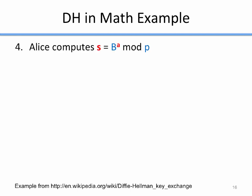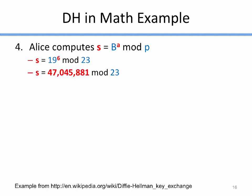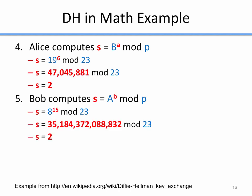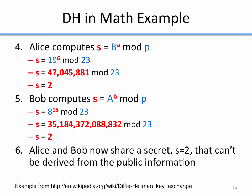Alice is going to compute the final secret shared number, which is capital B — the shared item she got from Bob — to the power of lowercase a modulo p. The shared number she got from Bob was 19, her secret number was 6, so she does 19 to the 6 mod 23 and gets 2. Bob does the same computation with his numbers: capital A to the power of lowercase b modulo p, so 8 to the 15 mod 23, which gives the same secret number, 2. So Alice and Bob now share a secret, s equals 2, that can't be derived from the public information. They could now use s as their key for standard symmetric key cryptography.